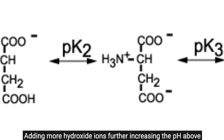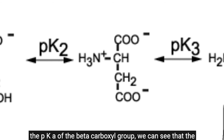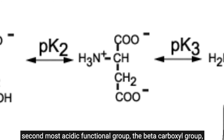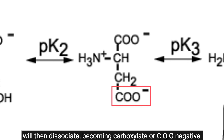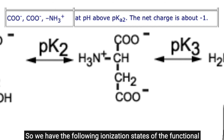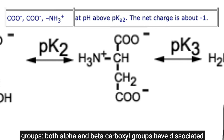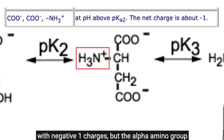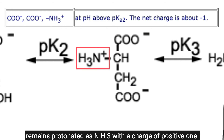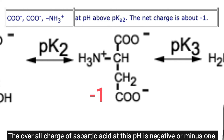Adding more hydroxide ions and further increasing the pH above the pKa of the beta-carboxyl group, the second most acidic functional group — the beta-carboxyl group — dissociates, becoming carboxylate or COO-negative. Both alpha- and beta-carboxyl groups are now dissociated with -1 charges each, but the alpha-amino group remains protonated as NH3-positive with a charge of +1. The overall charge of aspartic acid at this pH is -1.